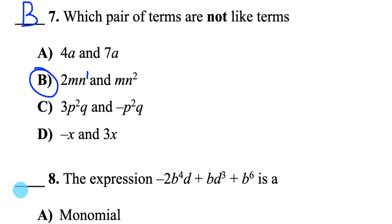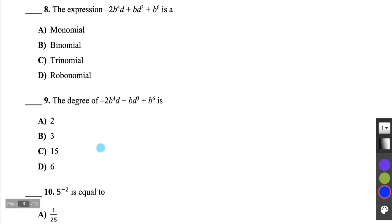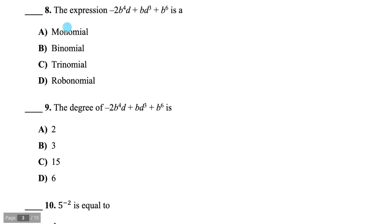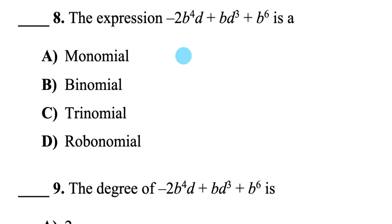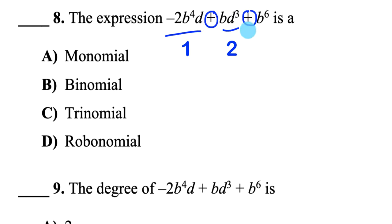Notice I didn't care what the coefficients were — we're just looking at the variable part of each term. Question 8 asks us to classify this expression by name. The terms are separated by addition and subtraction signs, and I count 1, 2, 3 terms — that means it's a trinomial.